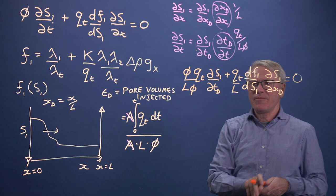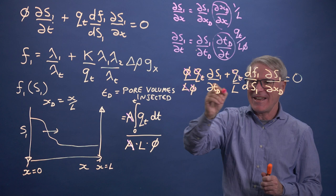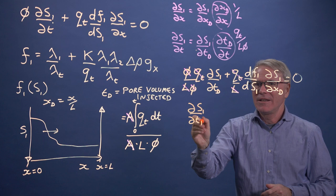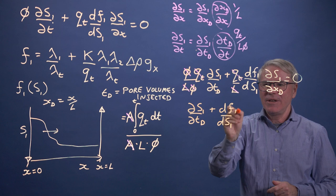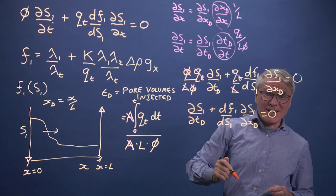Let's have a look at this. It's all been designed so everything cancels out nicely. The porosities cancel, the Qt's cancel, and the L's cancel. So what we're left with, in dimensionless form, is a much simpler version of the equation: dS1 by dTD plus dF1 by dS1 times dS1 by dXD. Now this is in dimensionless units, and we don't need to worry about Qt's and phi's or lengths. We've just got dimensionless numbers here.